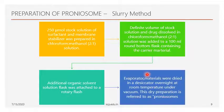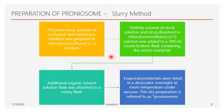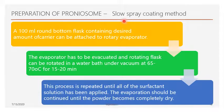After evaporation, the material is dried in a desiccator overnight at room temperature. The dried preparation is referred to as proniosomes. These are the four steps involved in the preparation by the slurry method.